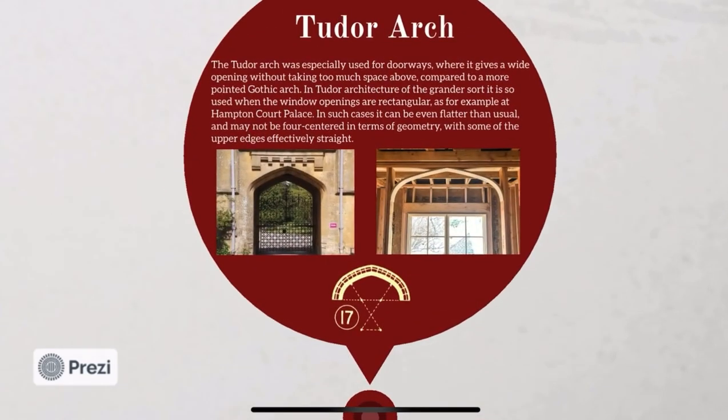Soon came the Tudor arch, especially used for doorways. It gives a wide opening without taking too much space above, compared to a more pointed Gothic arch. It can be even flatter than usual and may not be fully centered in terms of geometry, with some of the upper edges effectively being straight.